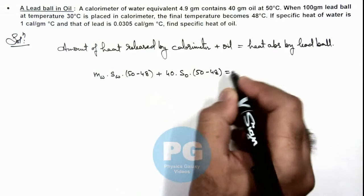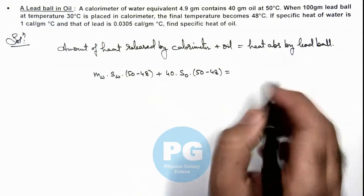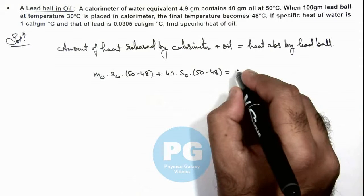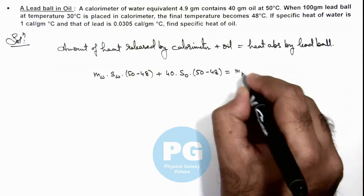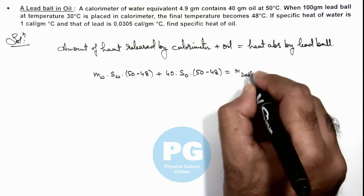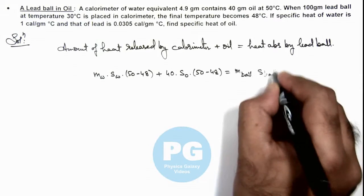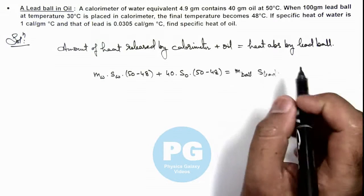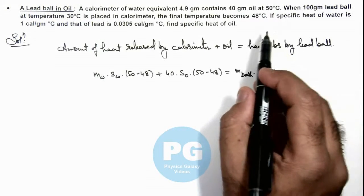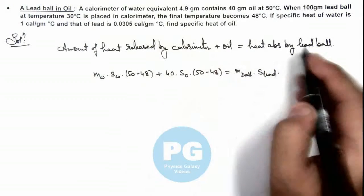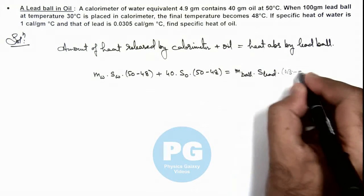This should be equal to the heat absorbed by the lead ball, for which we can write: mass of ball multiplied by specific heat of lead, multiplied by the rise in temperature from 30 to 48, which is 48 minus 30.